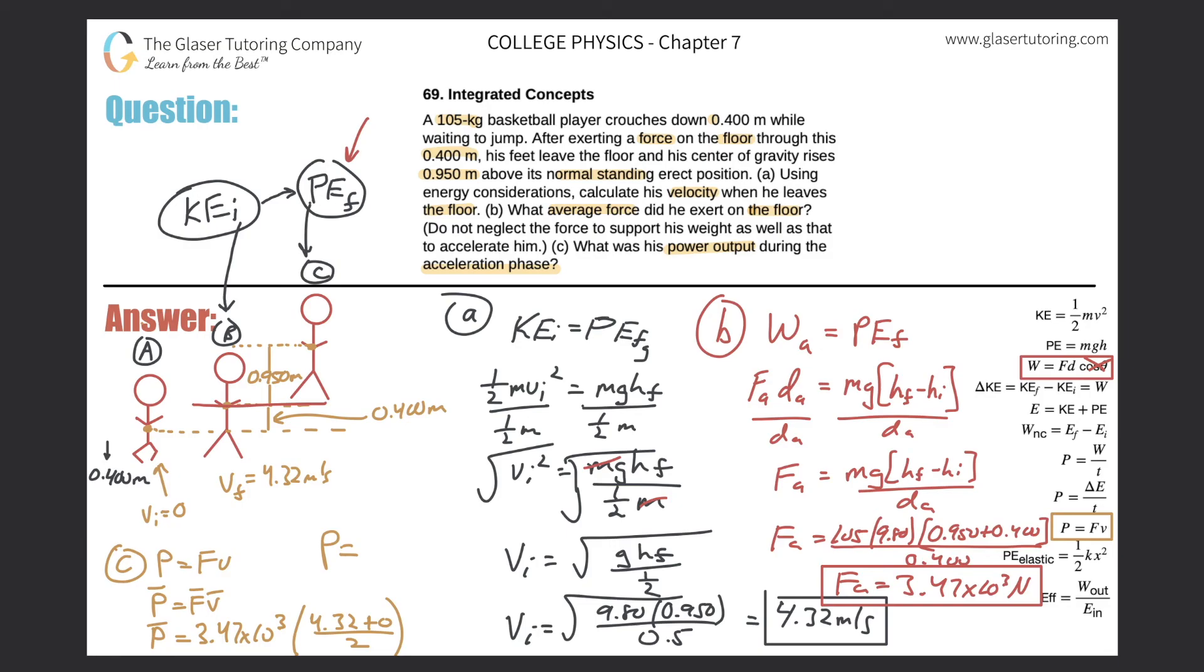So 3.47 times 10 to the third times 4.32 divided by two. Here we get about 7.50 times 10 raised to the third, and that's in terms of watts.